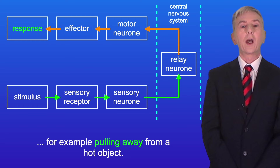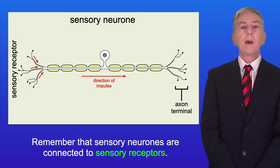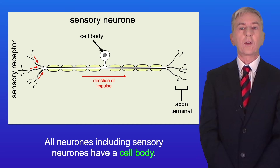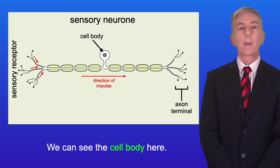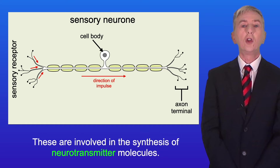In this video we're looking at the structure of neurons. Here is the structure of a sensory neuron. Remember that sensory neurons are connected to sensory receptors, and sensory receptors generate electrical impulses in response to a stimulus. All neurons including sensory neurons have a cell body, which contains the nucleus. In the cell body we also find mitochondria and endoplasmic reticulum, which are involved in the synthesis of neurotransmitter molecules.